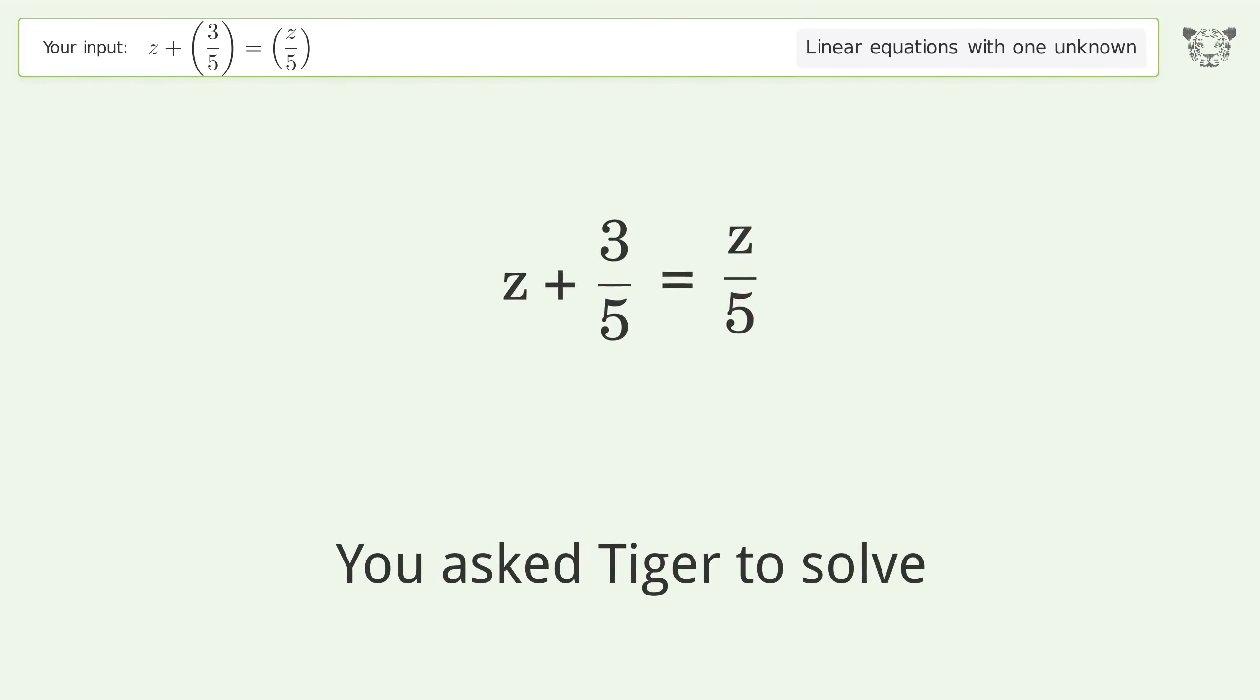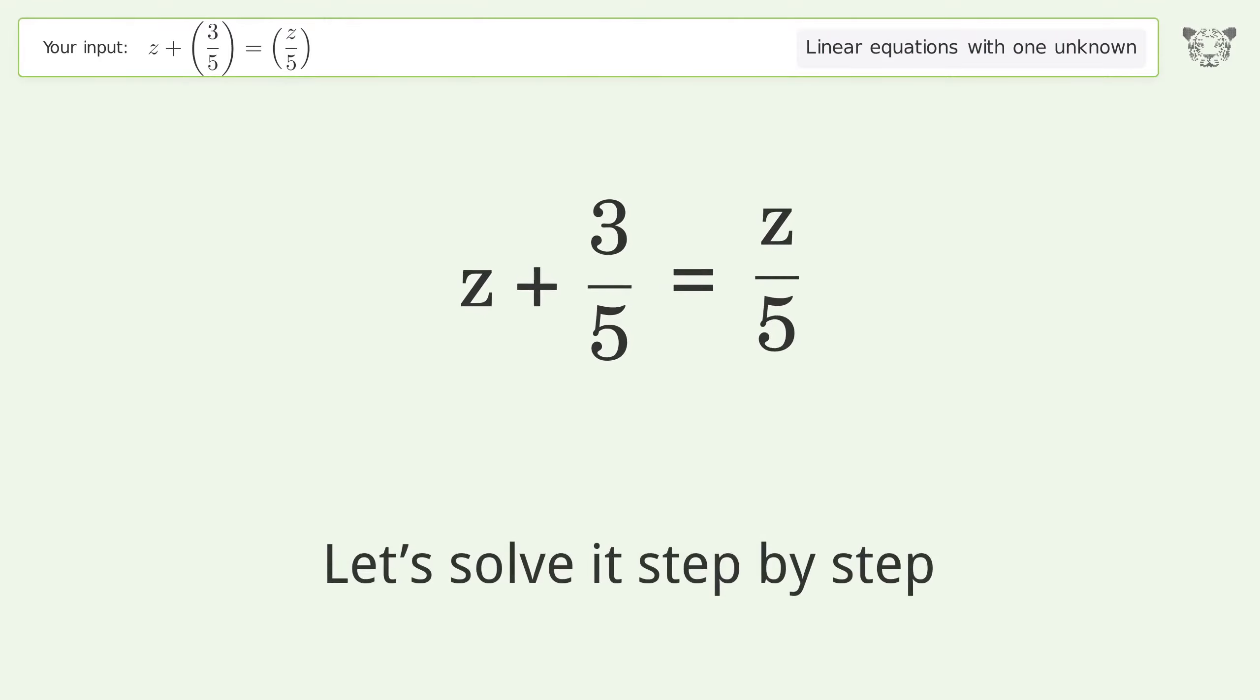You asked Tiger to solve this problem dealing with linear equations with one unknown. The final result is z equals negative 3 over 4. Let's solve it step by step.